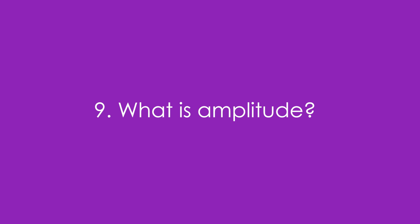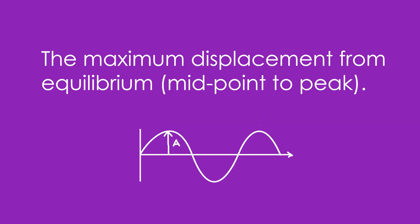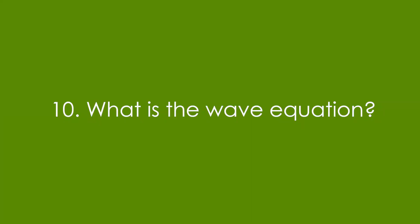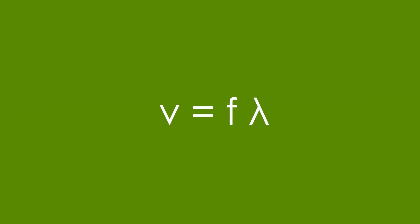9. What is amplitude? It's the maximum displacement from equilibrium — that's from the midpoint to the peak. 10. What is the wave equation? It's V equals F lambda, that's wave speed equals frequency times wavelength.